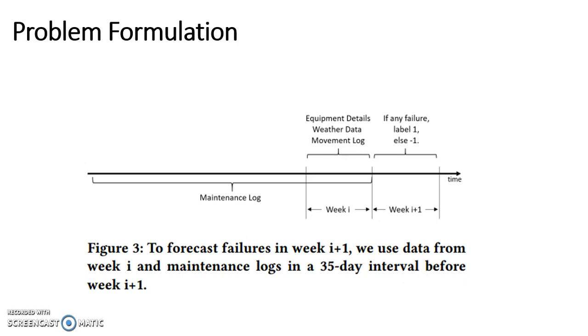We gave label 1 to a week if any failure was recorded in infrastructure and failure management system or movement log of this week. Our task is to predict whether there will be failures occur in any time of next week, depending on weather conditions, movement logs in this week, and maintenance logs in a period of 35 days before next week.